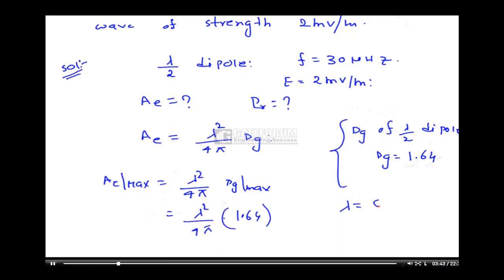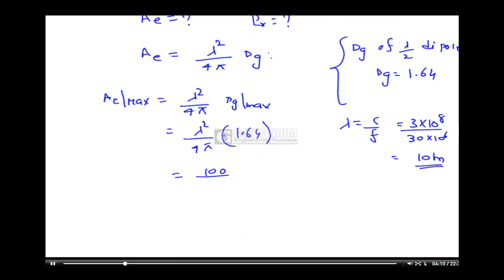Lambda is equal to C by F, that is 3 into 10 power 8 meters per second divided by 30 megahertz, which equals 10 meters. Substituting lambda squared equals 100: effective aperture equals 100 by 4 pi into 1.64, giving 13.05 meter square.